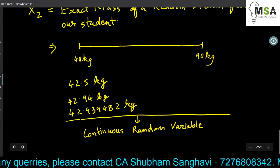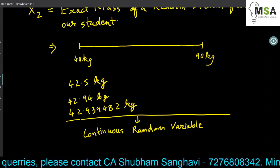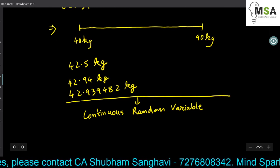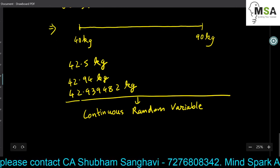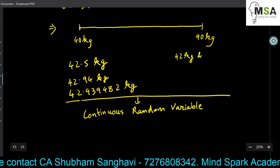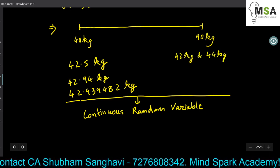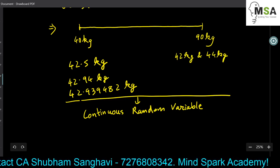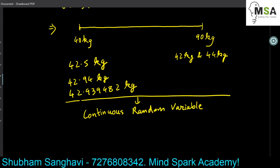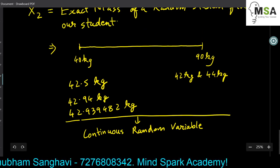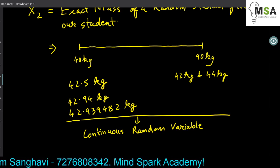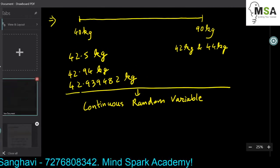A continuous random variable can never assume an exact value; it will always range between certain values. If someone's weight is around 43 kg, we say the weight is between 42 kg and 44 kg, but not precisely 43 kg. We use approximate weight in general, but the exact mass of any student cannot be counted to exact measurement. Such variables are always continuous random variables.